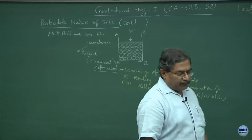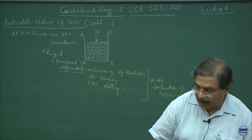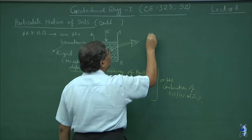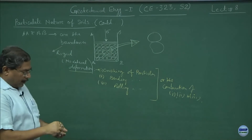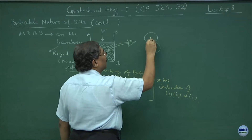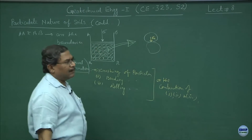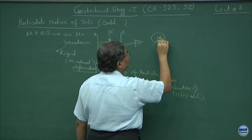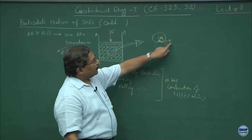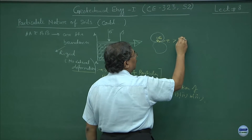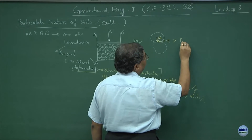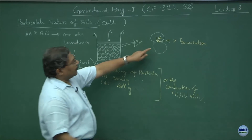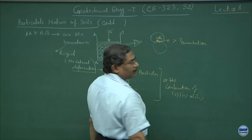I introduced the concept of stress and strain. If I magnify this system, you have a grain in touch with another grain. Because of the normal stress applied, there will be a normal component sigma_x and there will be a shear stress. The moment shear stress gets bigger than the tau of the binding — what we call cementation surrounding the particles — that is what gives the cohesion of the material.